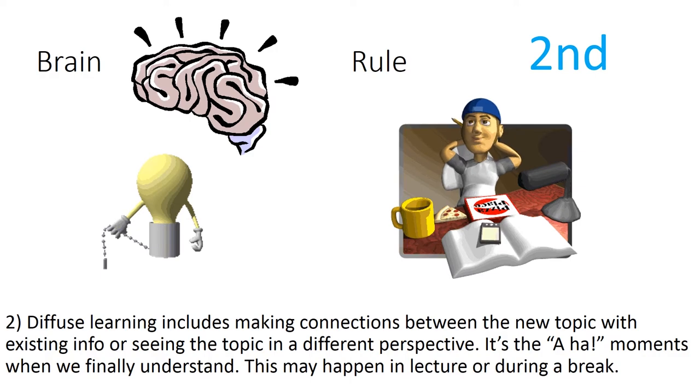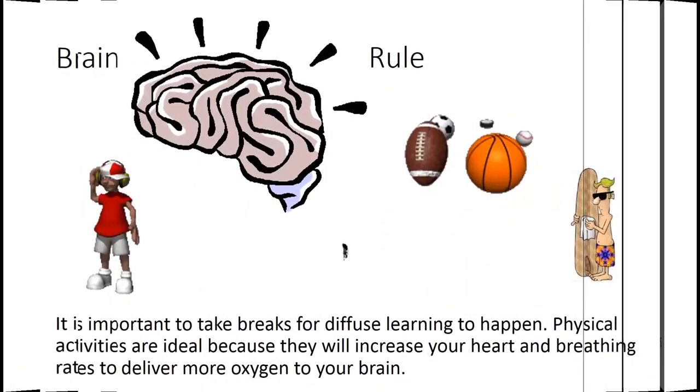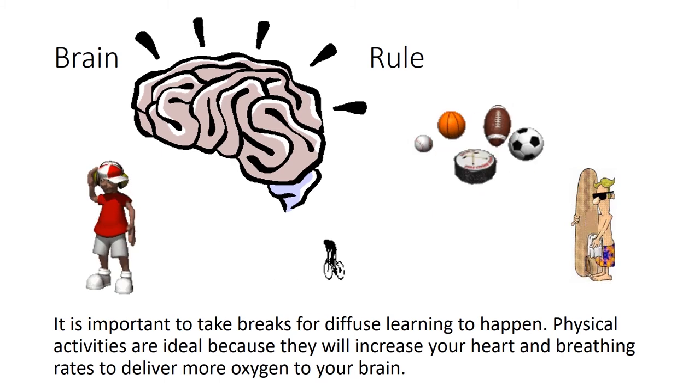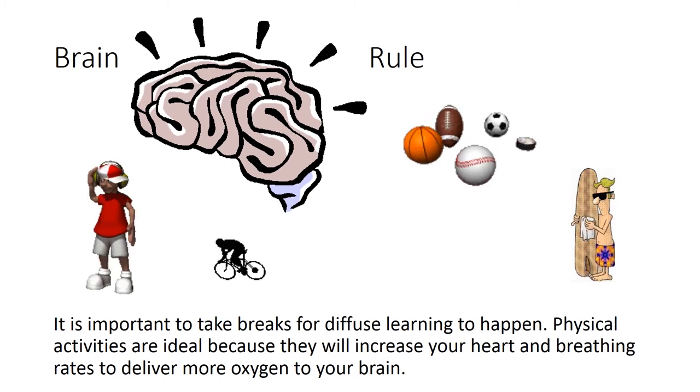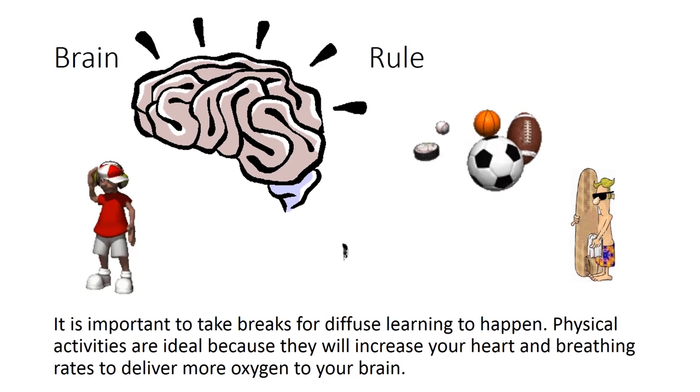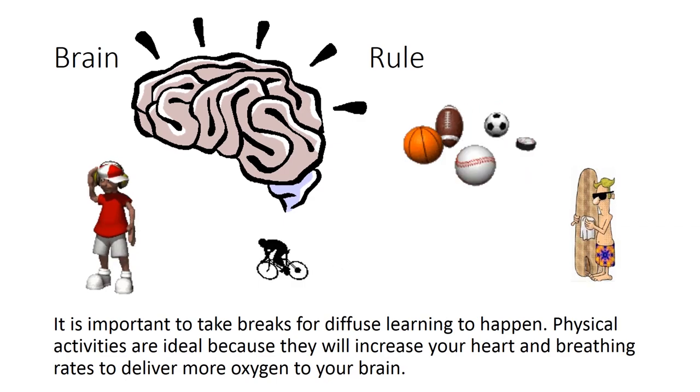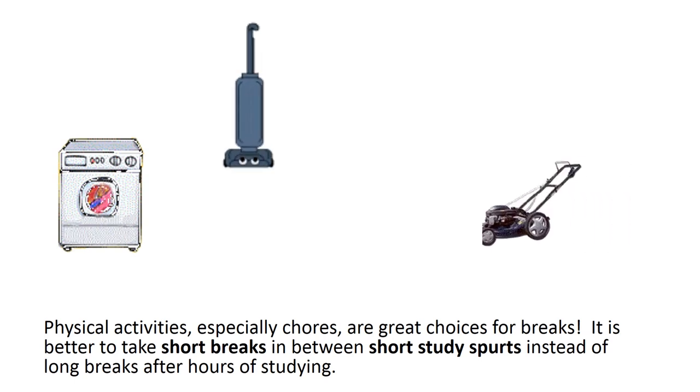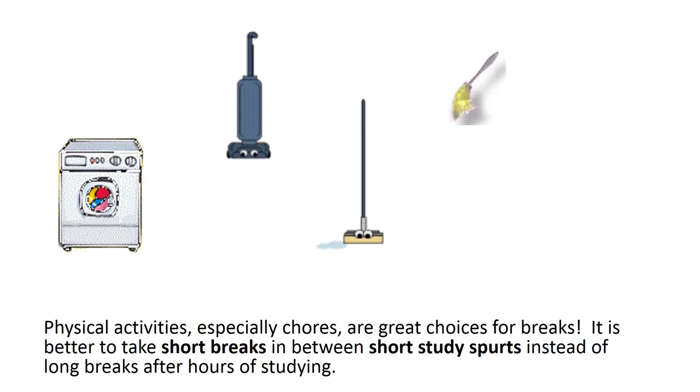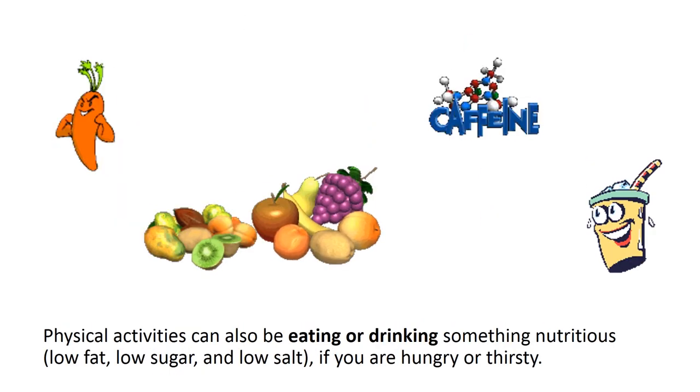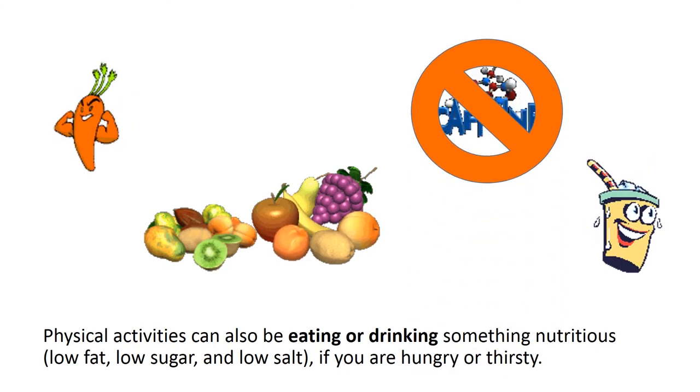Brain rule: It is important to take breaks for diffuse learning to happen. Physical activities are ideal because they will increase your heart and breathing rates to deliver more oxygen to your brain. Physical activities, especially chores, are great choices for breaks. It is better to take short breaks in between short study spurts instead of long breaks after hours of studying. Physical activities can also be eating or drinking something nutritious: low fat, low sugar, and low salt if you are hungry or thirsty.